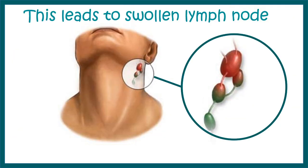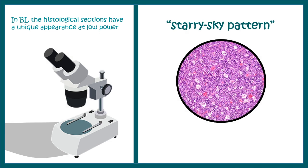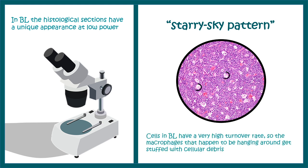Burkitt lymphoma is diagnosed in part by swollen lymph nodes that can be visualized under the jaw, in the neck region, or in other parts of the body. On biopsy, the characteristic appearance of Burkitt lymphoma is the starry sky pattern — analogous to Van Gogh's painting of bright stars in a dark night sky. In histological sections, bright white patches appear against a purple background; these white regions are macrophages that have engulfed cancerous cells and debris, creating this characteristic diagnostic pattern.